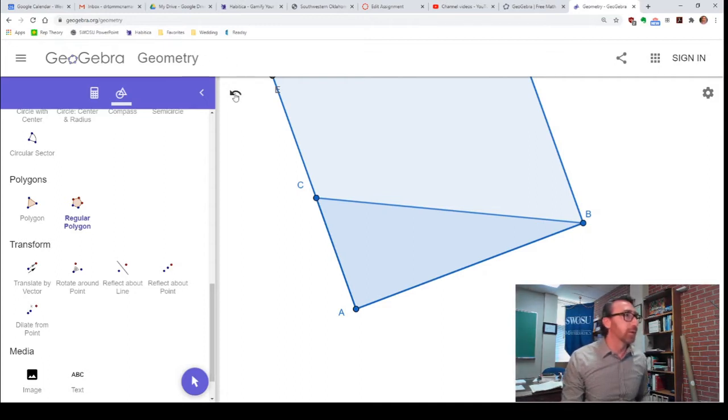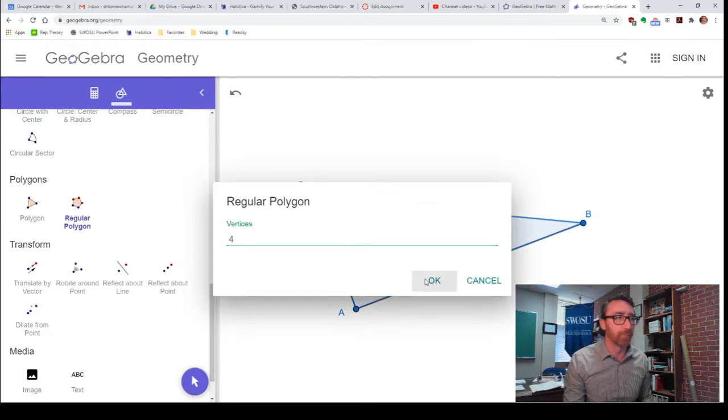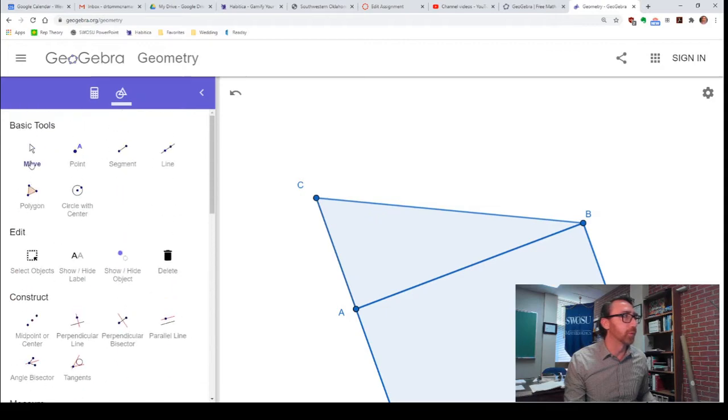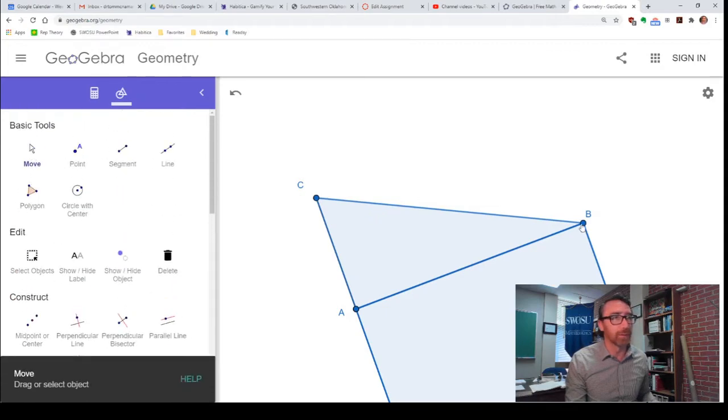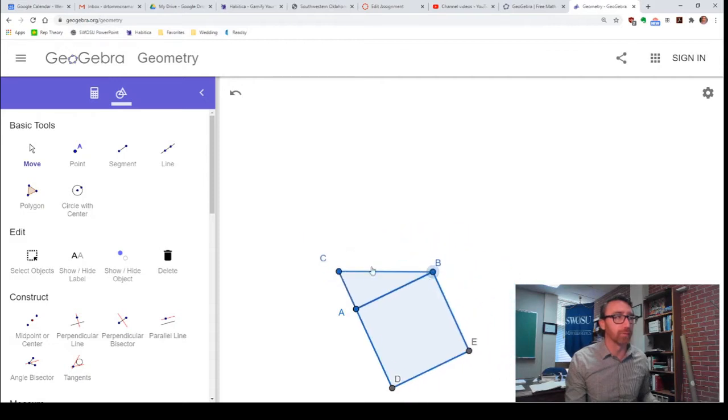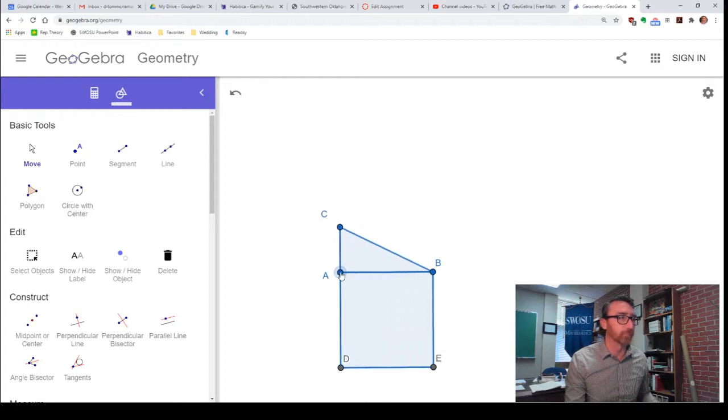Not really a problem. I'm just going to select the regular polygon tool again and select the vertices in the other order. And now the square is going the other way. So, let me go to the move tool here. And we can see if I change things up, I've got that square right there.